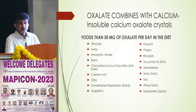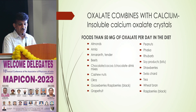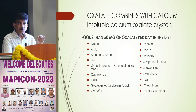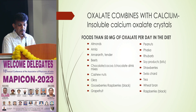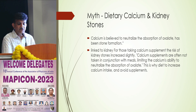Oxalate usually combines with calcium to form calcium oxalate stones, which are the commonest kidney stones. Foods high in oxalate that should be avoided include almonds, amaranth, palak (spinach), beets, cashew nuts, okra (bhindi), gooseberries, grapefruit, peanuts, strawberries, tea, and wheat bran.